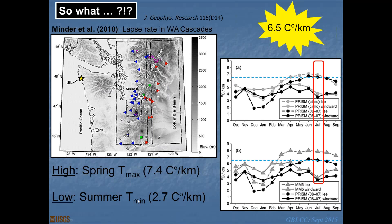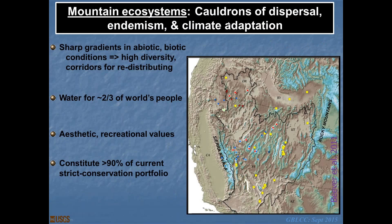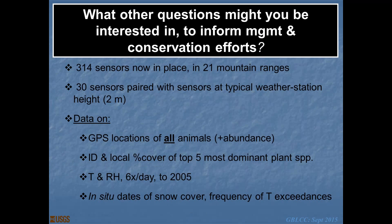One of my take-home messages is that mountain ecosystems really constitute cauldrons of dispersal, endemism, and climate adaptation. Because they contain sharp gradients in both biotic and abiotic conditions, they have high areas of both alpha and beta diversity of species, and represent natural corridors for species redistributing themselves across the landscape amid contemporary climate change. Mountains provide fresh water for two-thirds of the world's people and a diversity of aesthetic and recreational values. This slide is really an invitation to folks — we're providing these data to collaborators as available and invite collaborations on questions of all different scales.